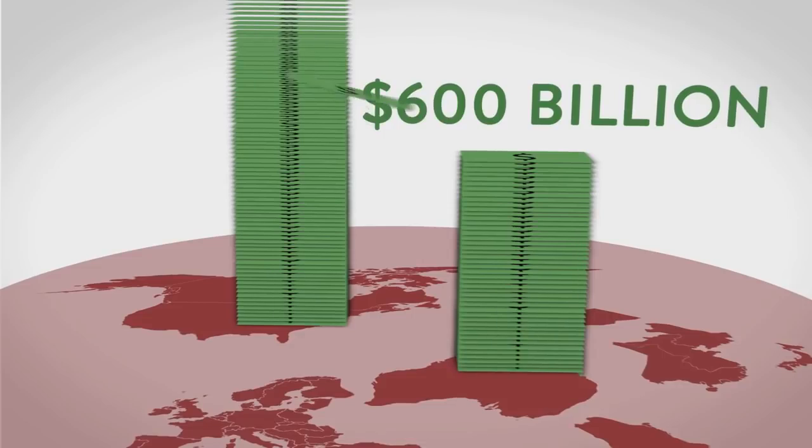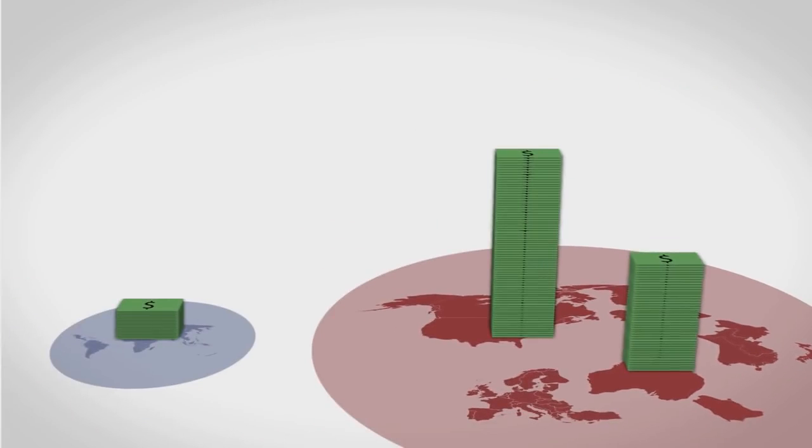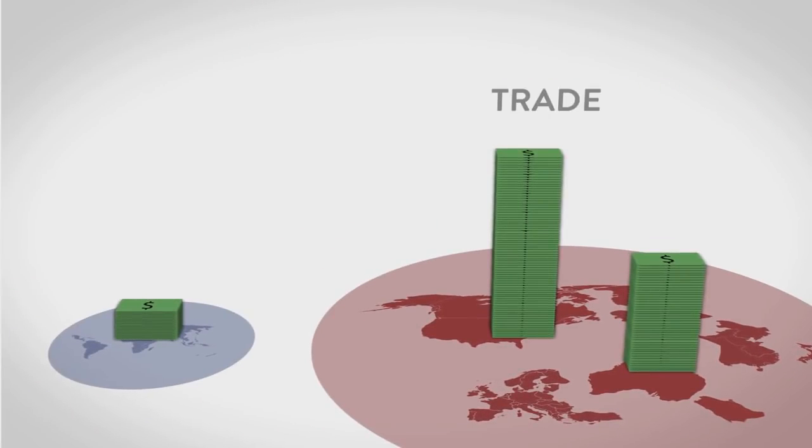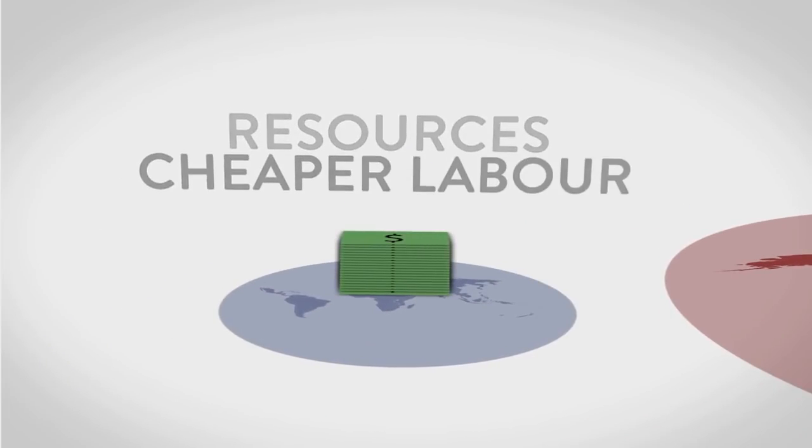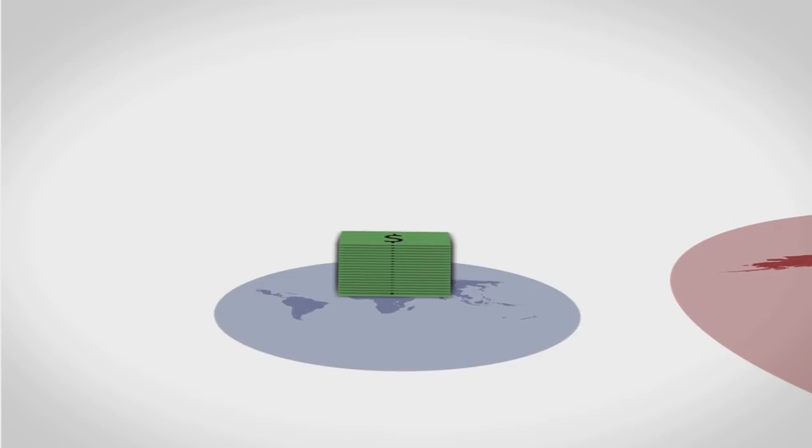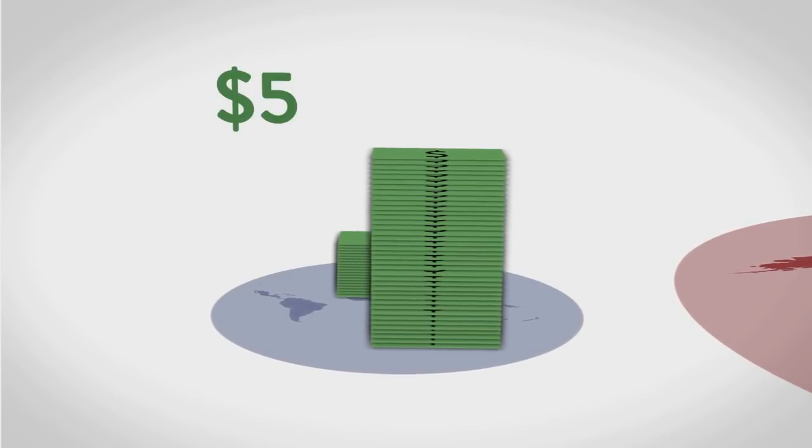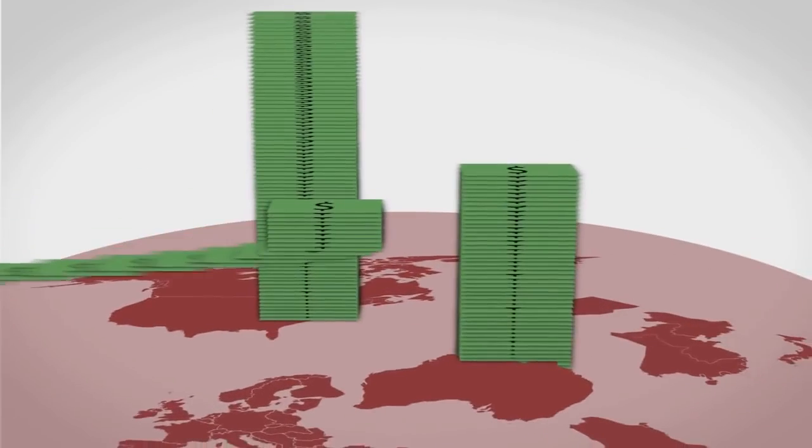And then there's the money that poor countries lose from trade rules imposed by rich countries to get access to more resources and cheaper labor. Economists from the University of Massachusetts calculate that this costs poor countries about $500 billion a year.